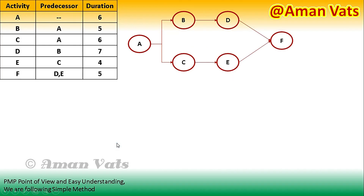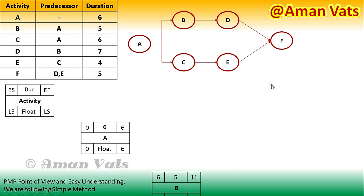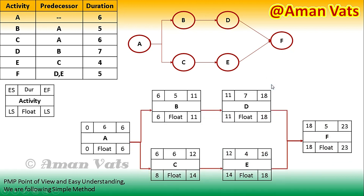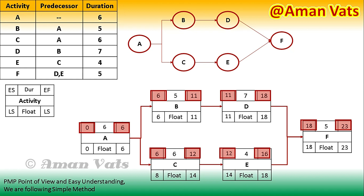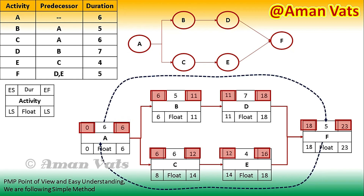This is a familiar diagram I've been using throughout the complete series on precedence diagramming method. I have defined activities, predecessors, and their durations. Using this diagram, I've already calculated early start and early finish using the forward pass method, and late start and late finish using the backward pass method. Now I will calculate total float, free float, and identify the critical path.